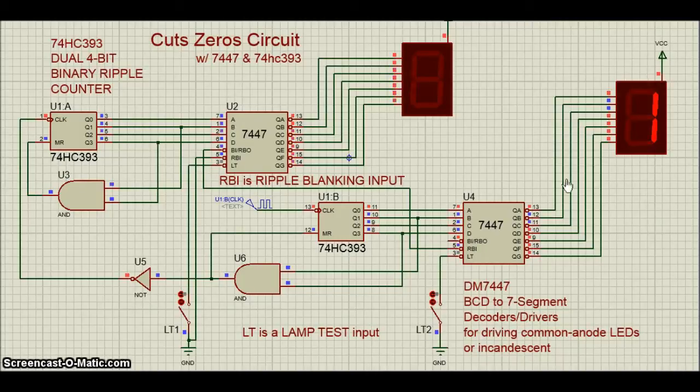This trick was used when digital circuits were not as intelligent as now with microcontrollers. As indicated by the circle logic symbols, all outputs are active low, as are LT, RBI, and RBO.